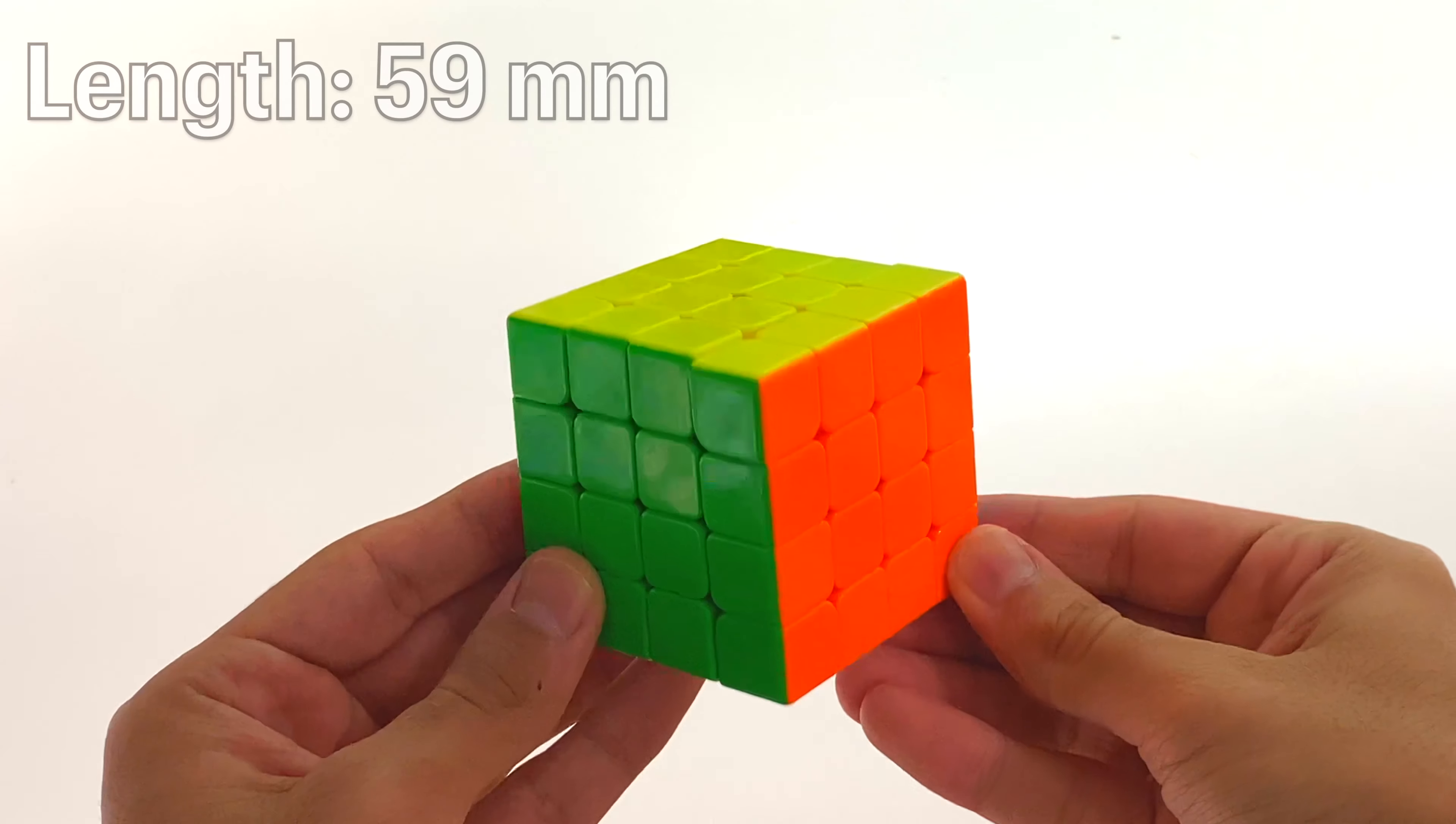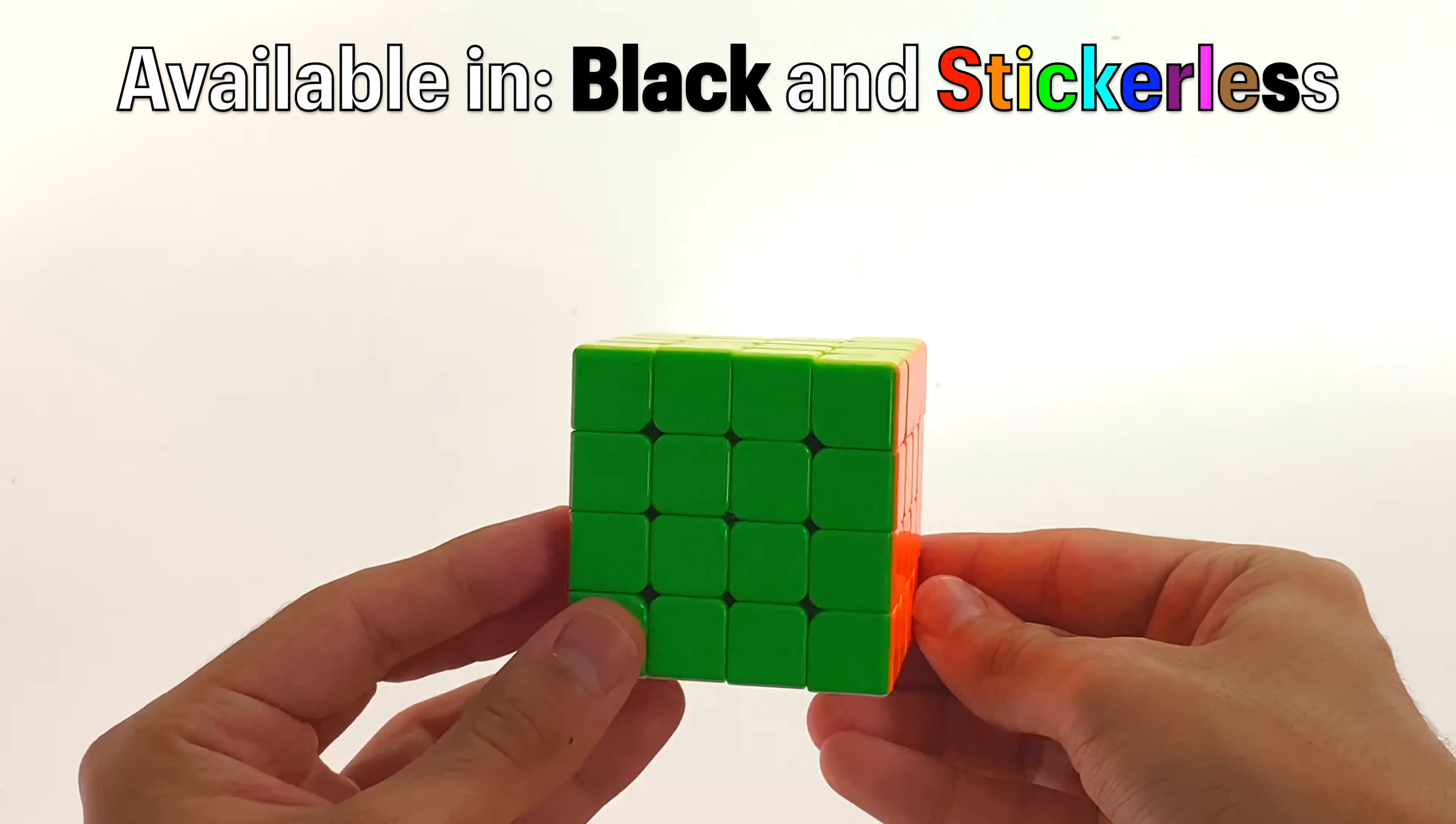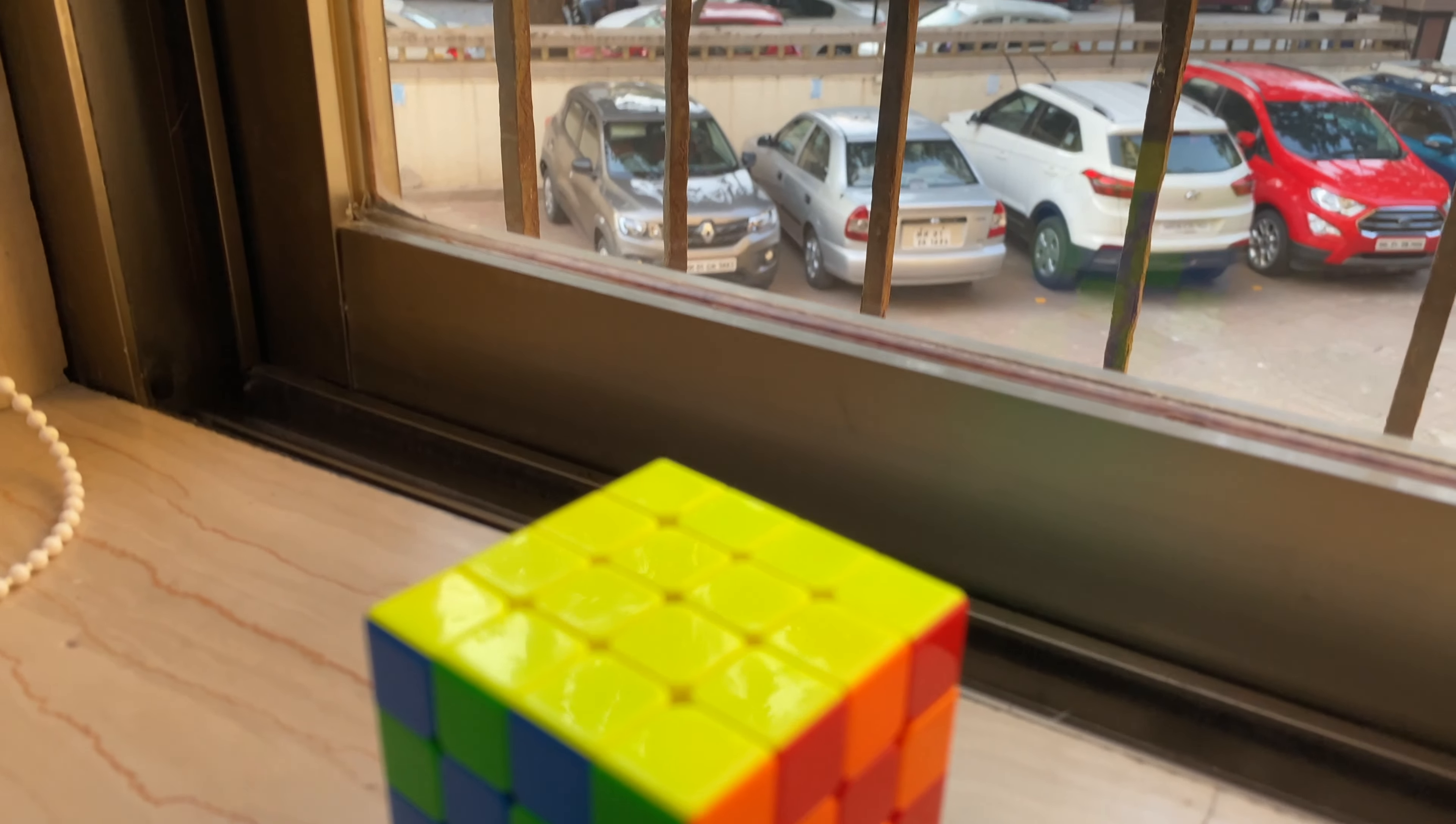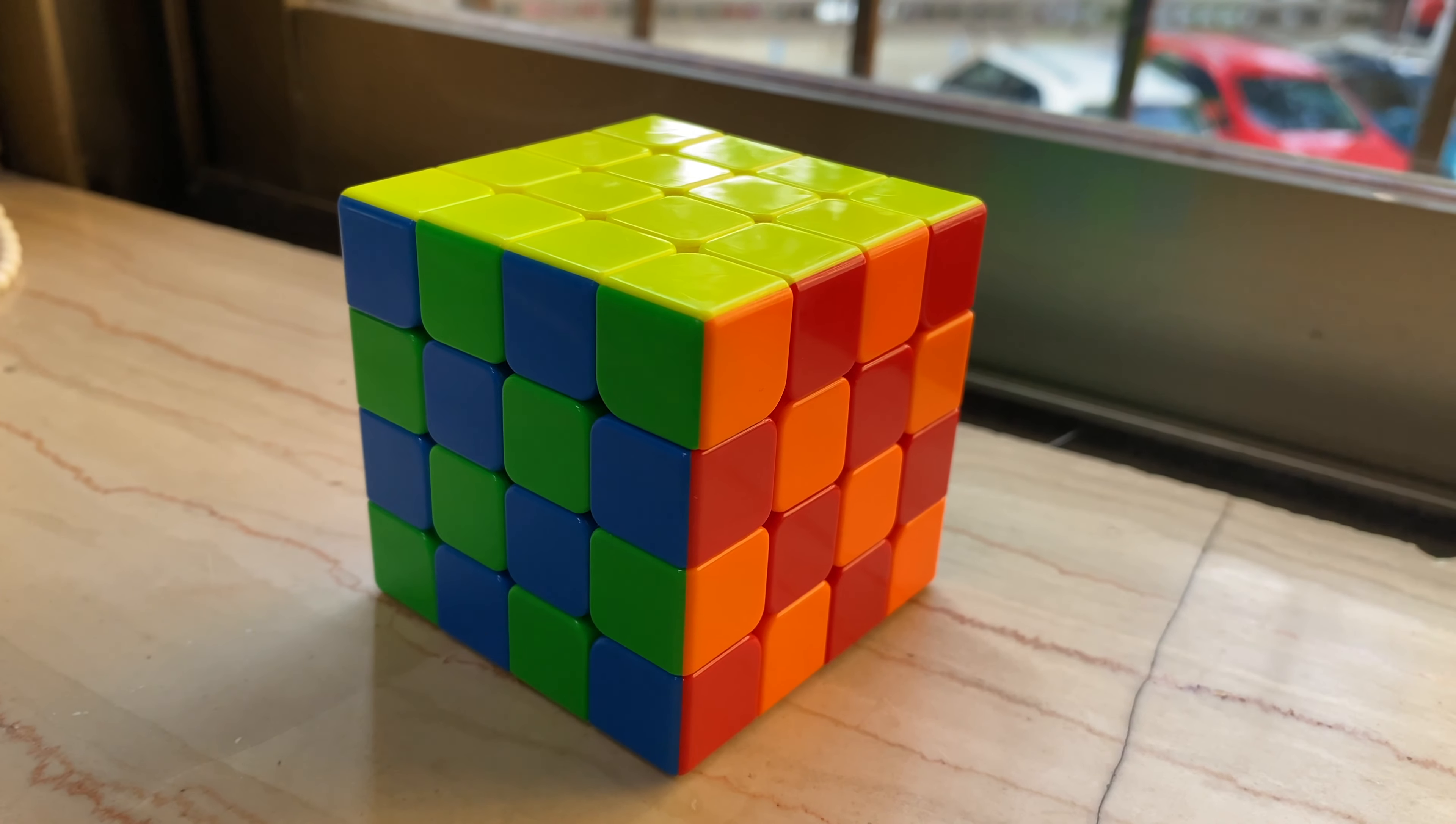It measures in at 59mm across and its mass is 119g and it can be bought in black and stickerless plastic. The cube I have here is the stickerless version and the shades are nice and vibrant and contrast quite nicely.